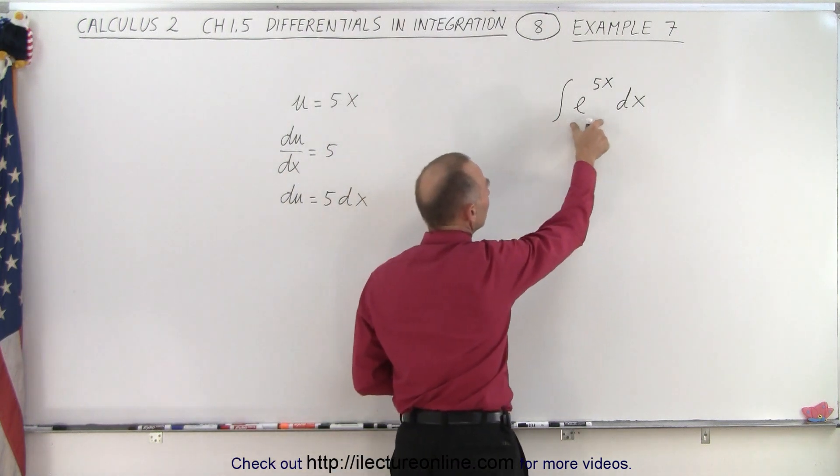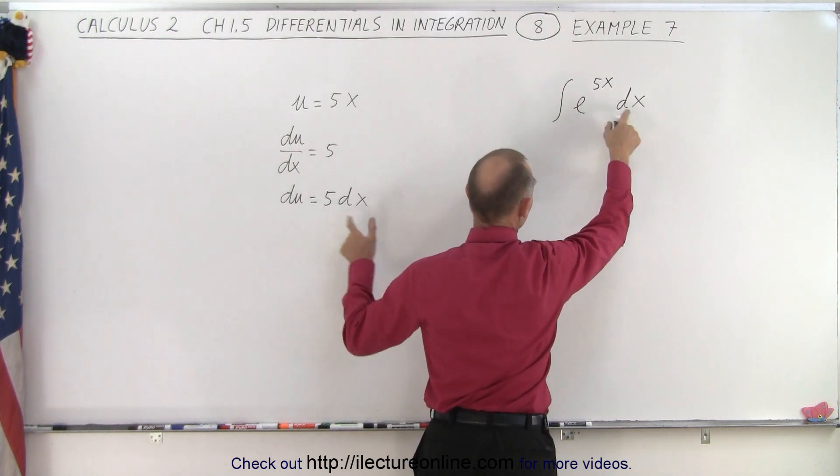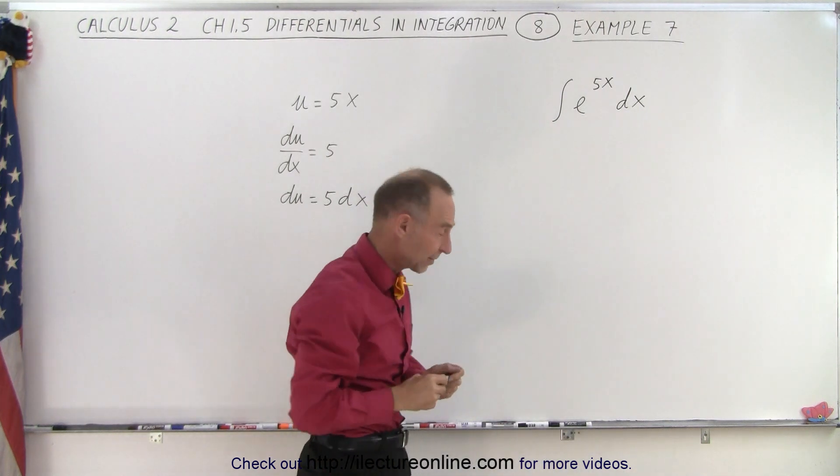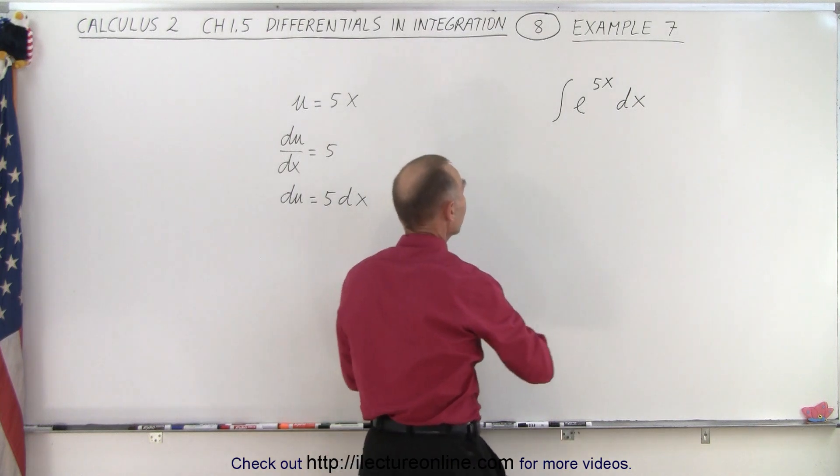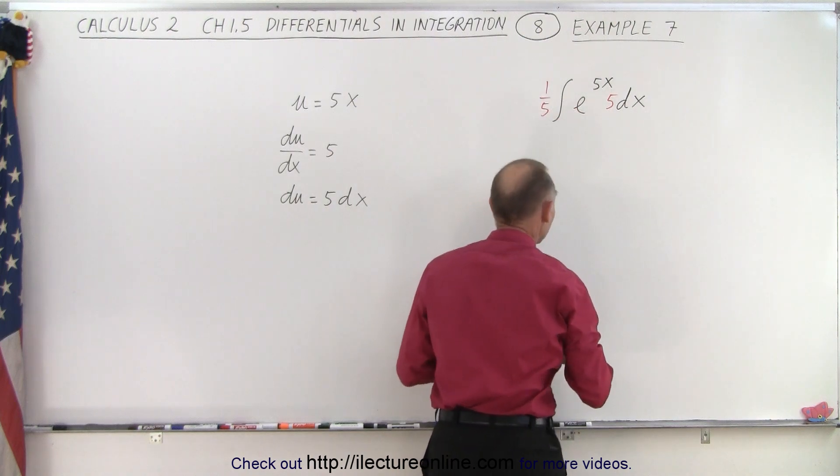This means that if you're going to integrate this function, you need a proper differential du, and that du would be 5dx. You're missing that—you only have dx. So what you want to do here is multiply this times 5 and then divide by 5 like this.